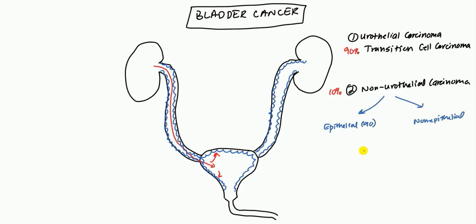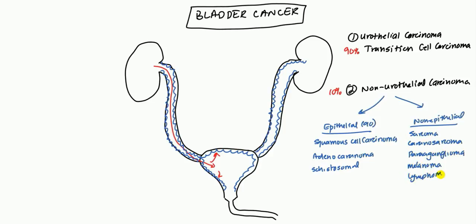Further classification under epithelial is going to be three types. You can either get the squamous cell carcinoma, the adenocarcinoma, and finally there's the schistosomal, which is related to a parasite called schistosomal hematobium. In the non-epithelial, there is a few types here, the sarcoma, carcinosarcoma, paraganglioma, melanoma, and lymphoma. But these are very rare. So the main ones that you want to think of is the urothelial carcinoma, also known as transitional cell carcinoma, and then the epithelial ones.